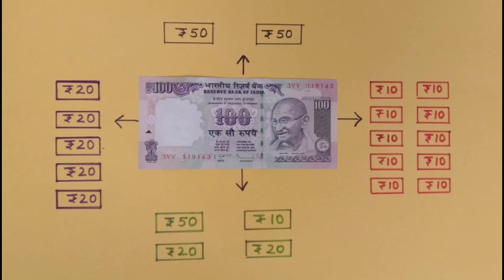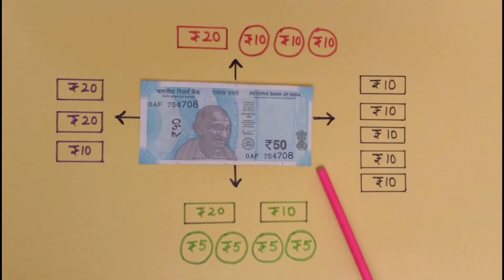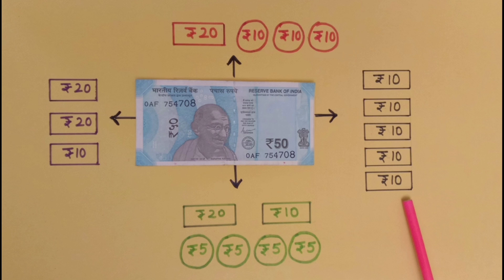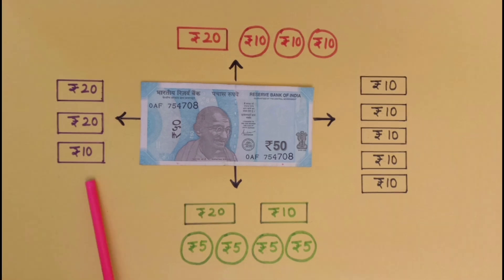You can also draw notes of your choice to replace rupees 100. In the same way, we can also draw different notes and coins in place of rupees 50. Here we have drawn 1 note of rupees 20 and 3 coins of rupees 10. Here we have drawn 5 notes of rupees 10 for rupees 50. In place of 50 rupees, we can also draw 1 note of rupees 20, 1 note of rupees 10, and 4 coins of rupees 5. Here we have drawn 2 notes of rupees 20 and 1 note of rupees 10 in place of rupees 50.